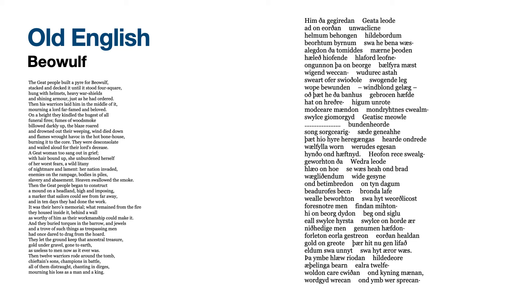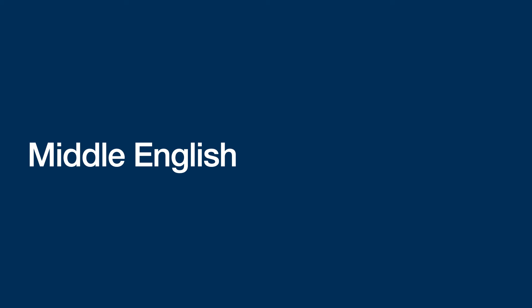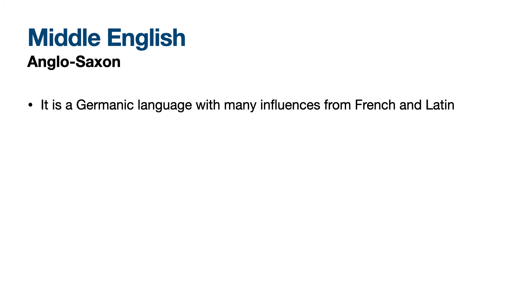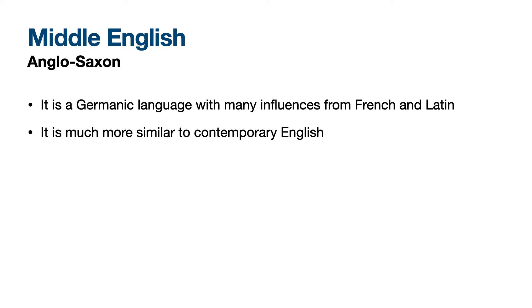Let's move to Middle English. Middle English is an evolution of Anglo-Saxon and it is a Germanic language, but there are many influences coming from French and Latin. The Roman domination of England had an important weight, and the presence of monasteries had an important weight on the English language. Also, the fact that William the Conqueror and his court came from France and spoke French obviously had a very large influence on the evolution of Old English into Middle English.